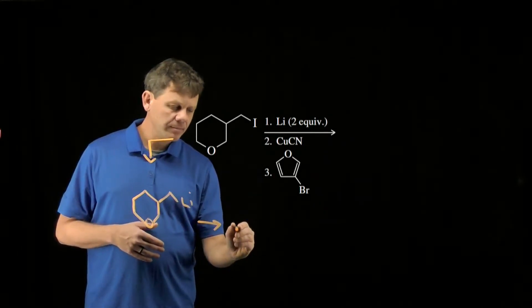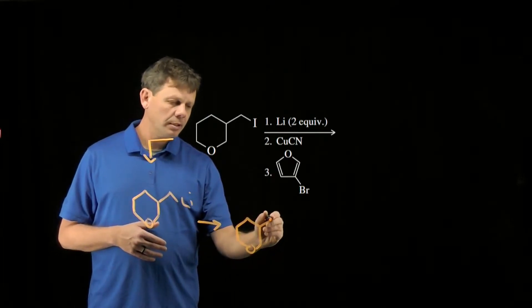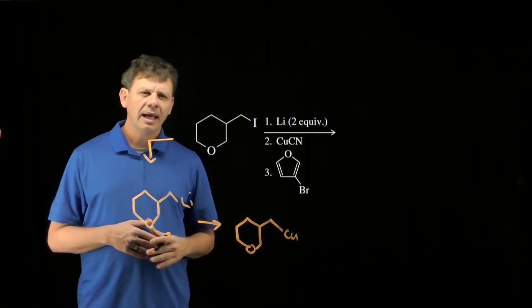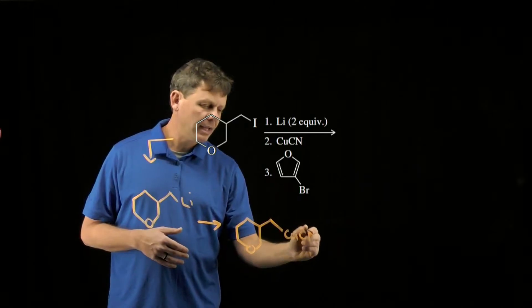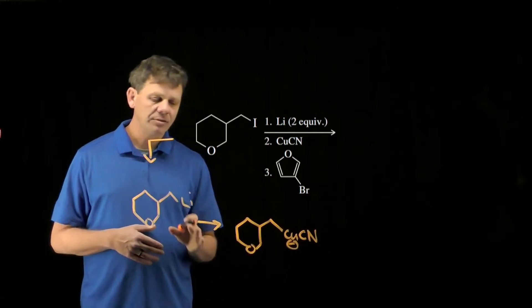And so when we do this reaction we're going to end up with this group attached to copper. And the cyano group will remain attached. Now when we have two groups attached to copper, copper is going to have a negative charge.